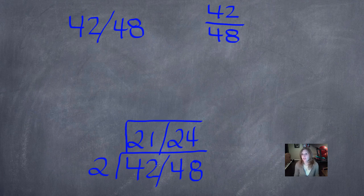What will divide evenly into both 21 and 24? 3. 3 goes into 21, 7 times. 3 goes into 24, 8 times.